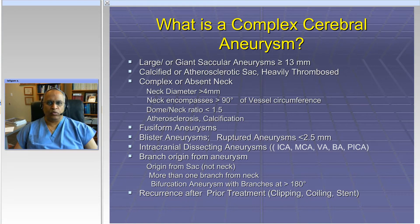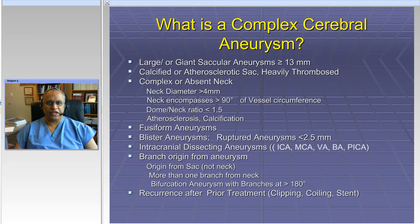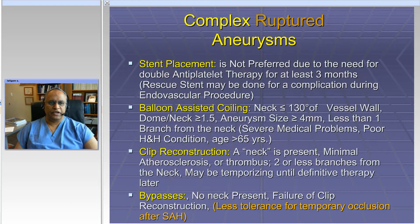First of all, we have to define what's a complex aneurysm. Aneurysms are complex sometimes because of their size — very large size or giant size. They may be complex because of the shape of the neck, due to the fact that they have a lot of thrombus inside, and/or the origin of branches. Previous treatment and recurrence also makes them quite complex.